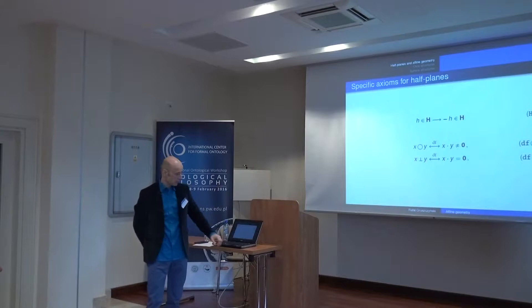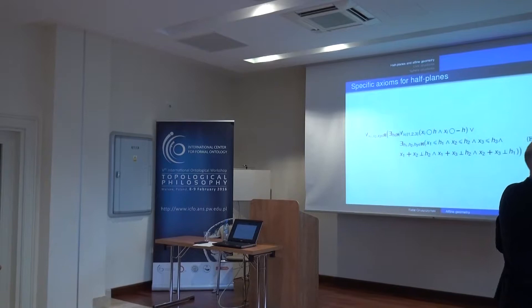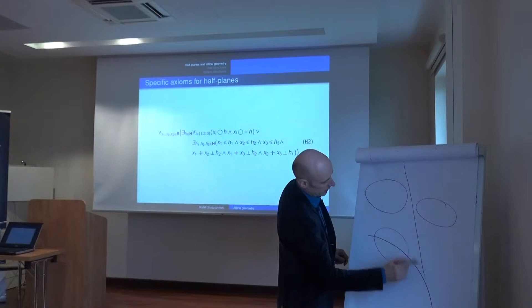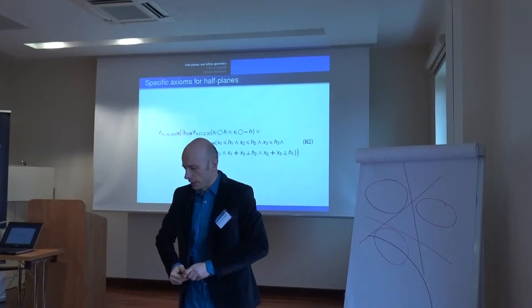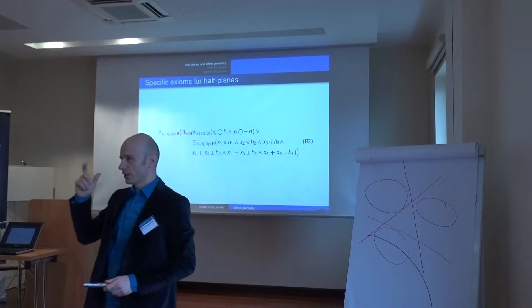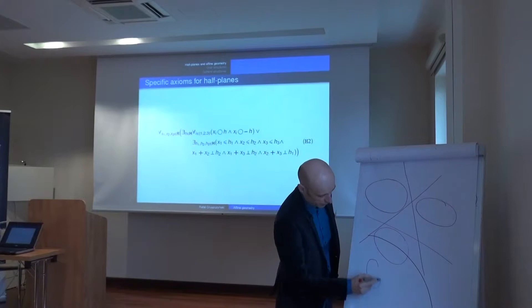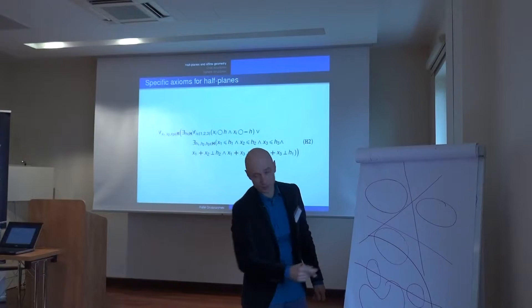The second axiom is more complicated. It says something like: if you have three regions, either they are separated by half-planes, or you will always find a half-plane which goes through all three of them. Going through a region A means the region overlaps H and the region overlaps the complement of H. So for any three regions, either they are separated by half-planes, or there is a half-plane that cuts through all three.